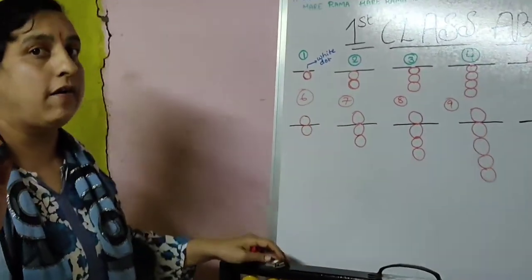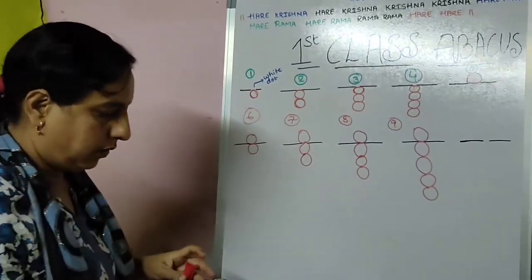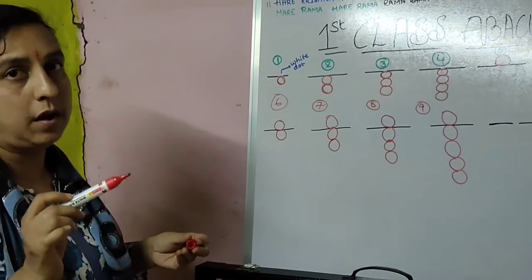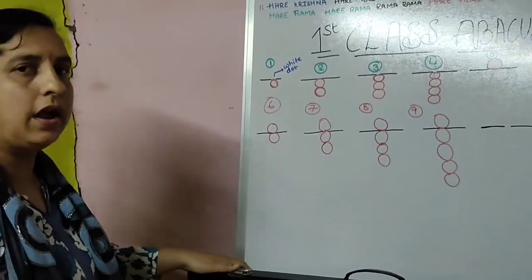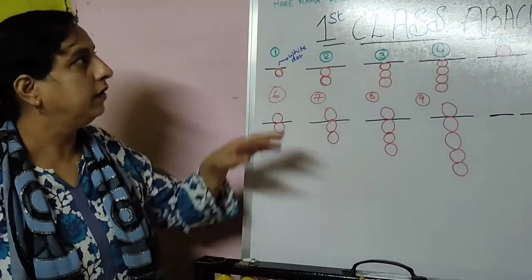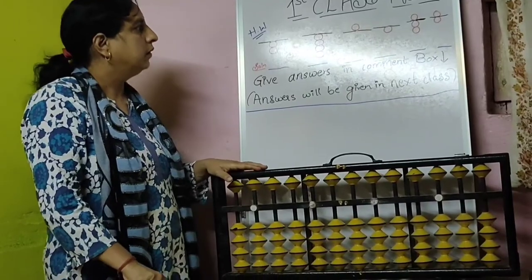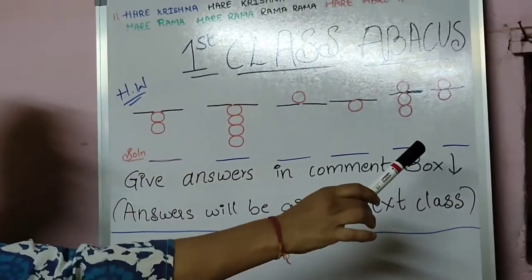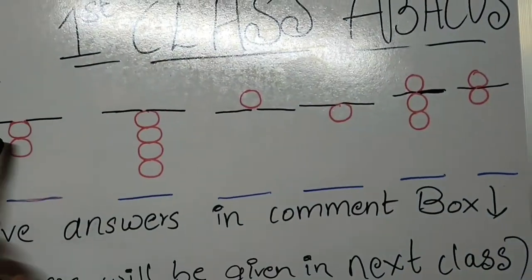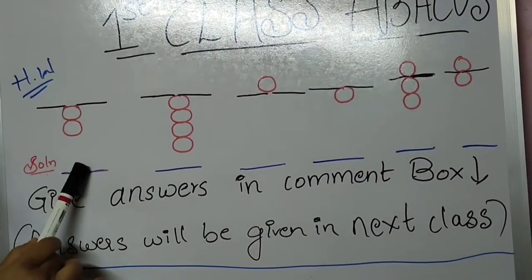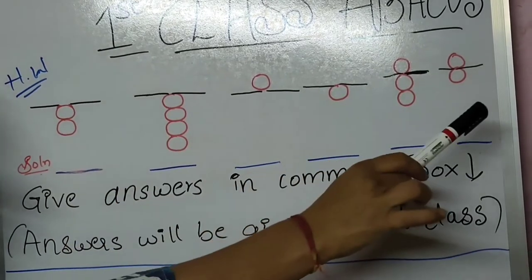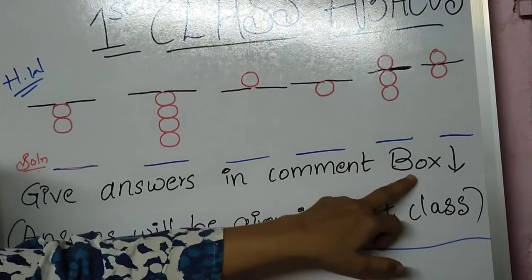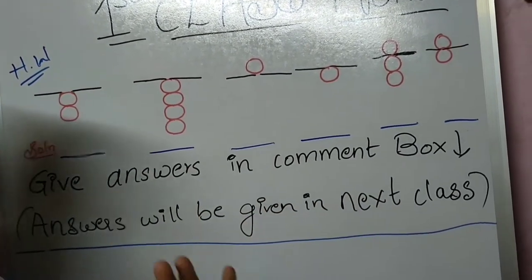So only 9 numbers you have learnt. Now I will draw some beads here and you can write the answer in the comment. So this is 2. I have told the answer, but I will not tell these all answers — you have to write them in the comment box.